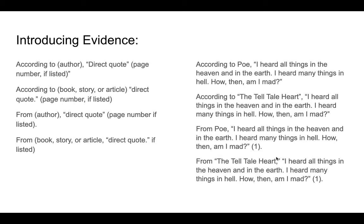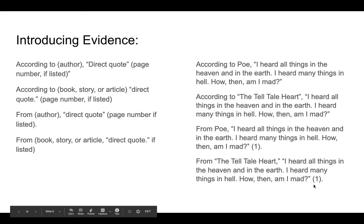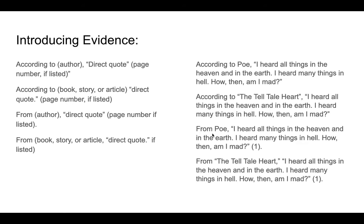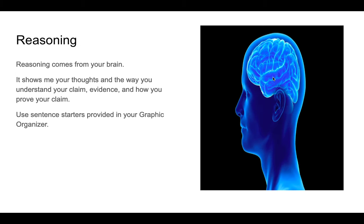From The Tell-Tale Heart: 'I heard all things in heaven and on earth. I heard many things in hell. How then am I mad?' You've got to include either the author or the name of the book, short story, or article. If you do not have one of these things, you're not doing evidence properly. When you give the evidence, it should always be word for word with a quotation mark at the beginning and a quotation mark at the end.